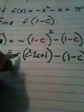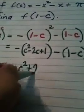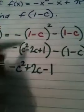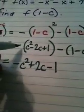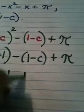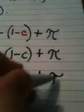So, when I distribute this negative 1, I have opposite of c squared, I have a plus 2c, I have a minus 1, because all these signs change because of this opposite of. Here, when I distribute a negative 1, I get negative 1 plus c, and at the end I pick up a pi.